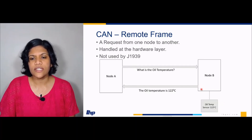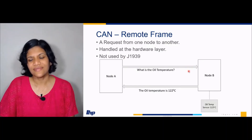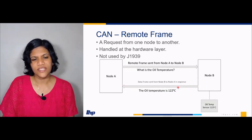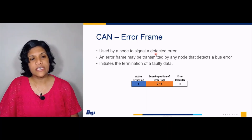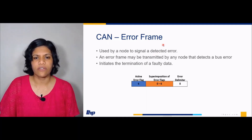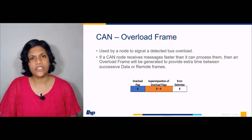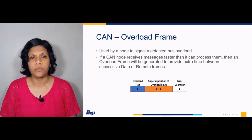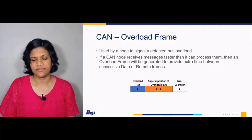Node B then sends the data — the temperature value. So the frame from node A to node B is a remote frame, and the data sent from node B to node A is a data frame. Next is error frame — if receivers detect some error, they will send an error frame. Next is overload frame — when receivers receive messages but keep getting more messages before they can process them, an overload frame will be generated to allow the receivers to process the data.